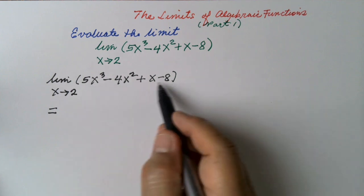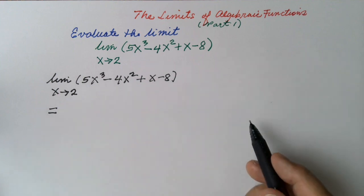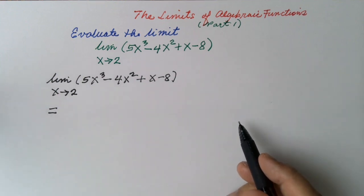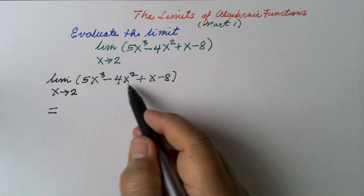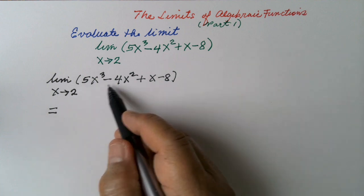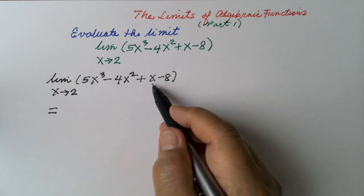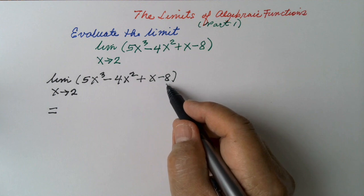This is the function — it contains 4 terms. We are going to find the limit of each term. In the first term and in the second term, we will apply the Constant Coefficient Law together with the Power Law. In the third term, we will apply the Identity Law, and in the last term, we will apply the Constant Law.